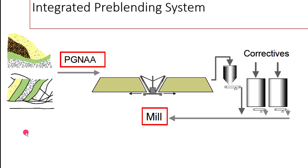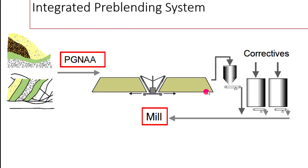With the technology available today, we can and should make the best possible use of our longitudinal pre-blending system. An integrated system allows two or more components to be dumped on the same pile in a controlled manner to attain a predefined chemical value. This is done with a PGNA — an online analyzer — which continuously monitors the material fed to the pre-blending pile. Corrections will then have to be done to the feeding system of the raw mill.